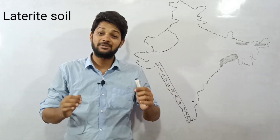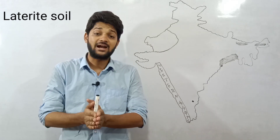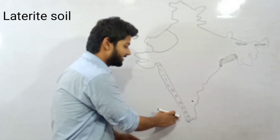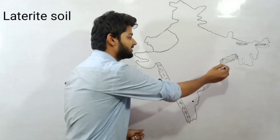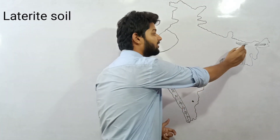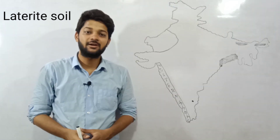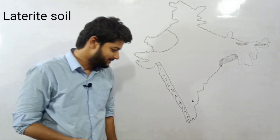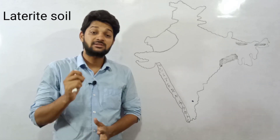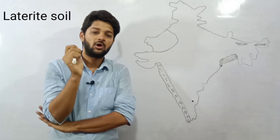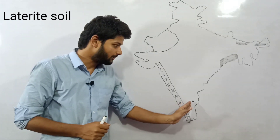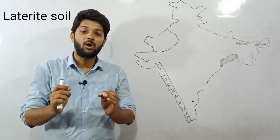Looking at the map of India, four places are there where laterite soil is found. First is the part of Western Ghats, second is in the Tamil Nadu region, third is at the Odisha coast, and fourth is in the northeastern states, that is in the parts of Meghalaya and Assam. India is nearer to the equator, and especially the southern part of India, the tropical region, is quite close to the equator. So the Western Ghats and Tamil Nadu region will have a hot temperature.